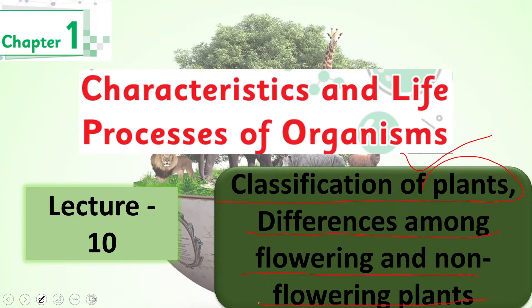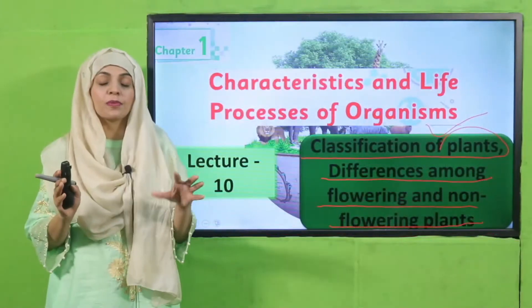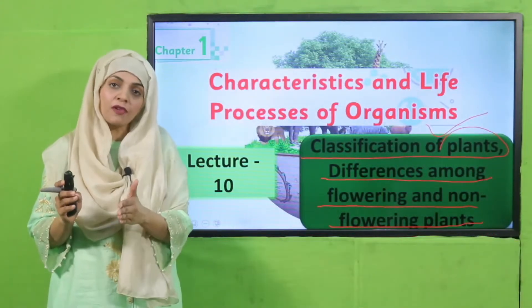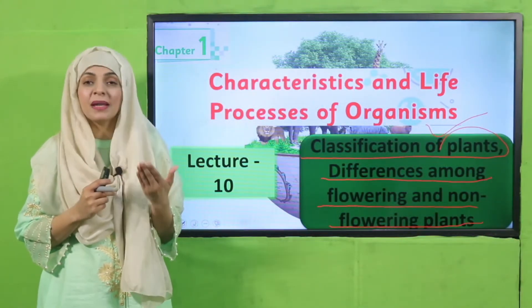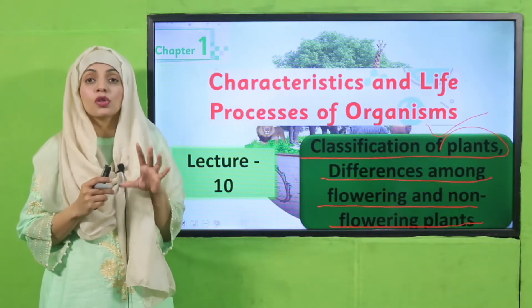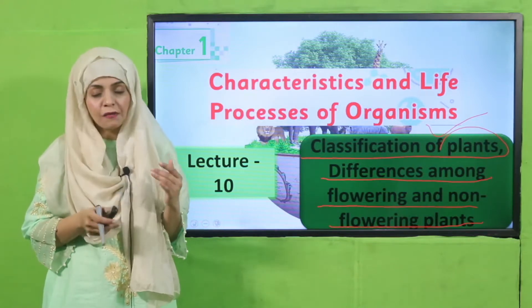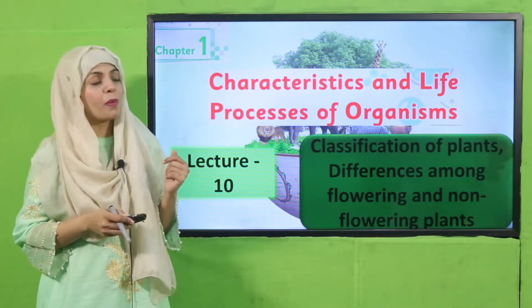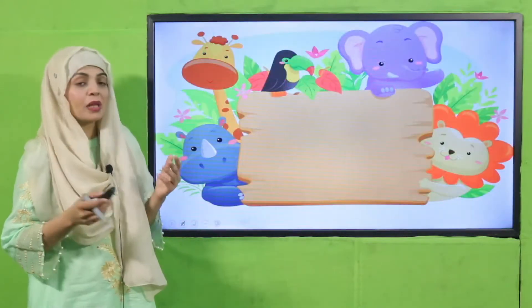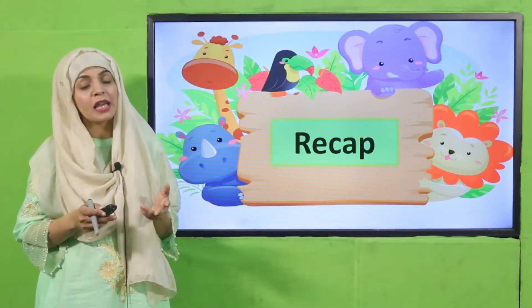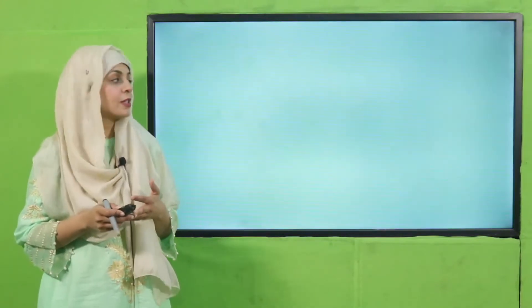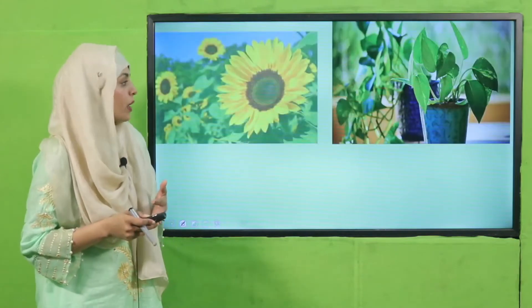In the previous lecture, we categorized and classified plants into two groups: flowering and non-flowering, and then we discussed their similarities. So today we will discuss their differences. Let's quickly move forward towards the recap of the previous lecture. Listen to the question very carefully and then answer it.